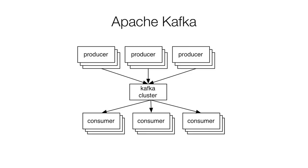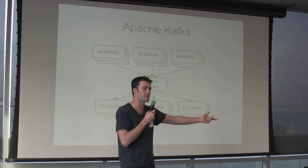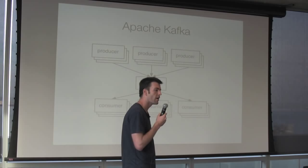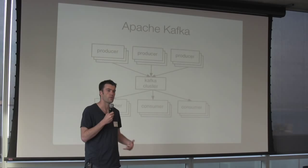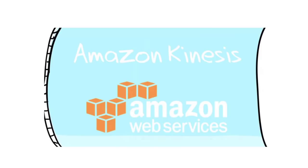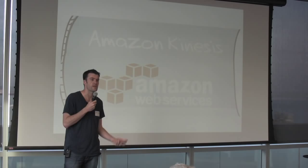Kafka is a messaging system. Producers publish data and send it to a remote cluster which stores the messages. Consumers subscribe and get the messages out. It's similar to JMS systems but built differently. For a long time it was an odd duck, but Amazon made a very similar service called Kinesis. Most of what I'll say about Kafka could also apply to Kinesis.